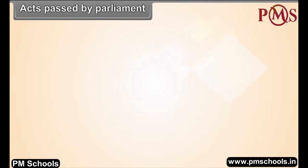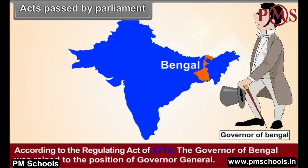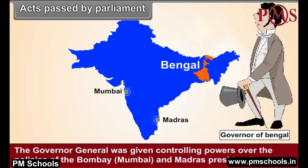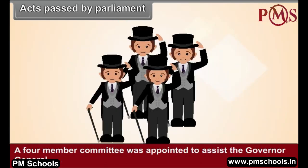According to the Regulating Act of 1773, the Governor of Bengal was raised to the position of Governor General. The Governor General was given controlling powers over the policies of the Bombay and Madras presidencies. A four-member committee was appointed to assist the Governor General.